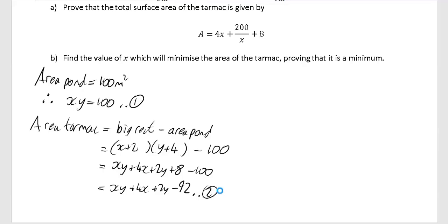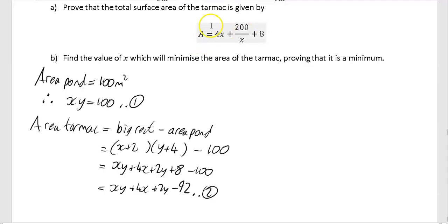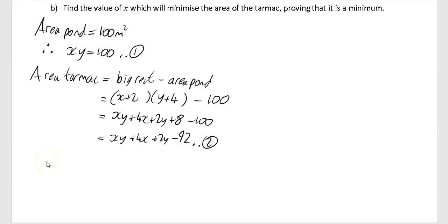We haven't quite got where we want to be. The target expression has no y's in it. So we rearrange equation 1 to make y the subject: y equals 100 over x. Then we substitute that back into equation 2.